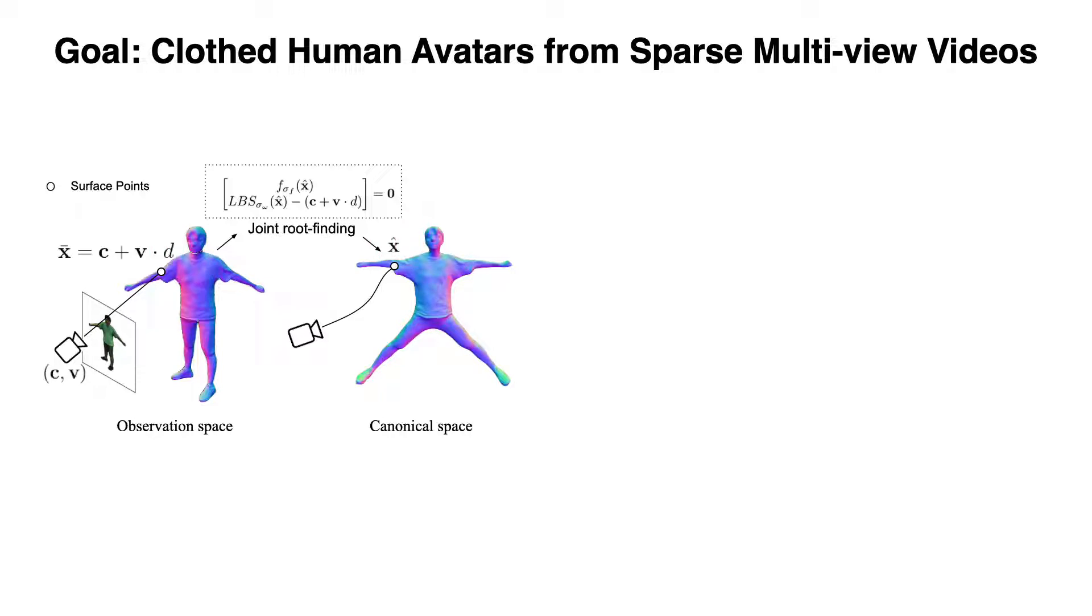This step uses the canonical SDF and a learned skinning function, both modeled as neural implicit fields.